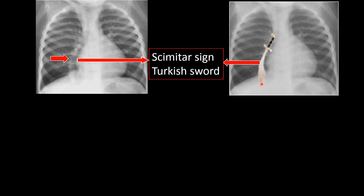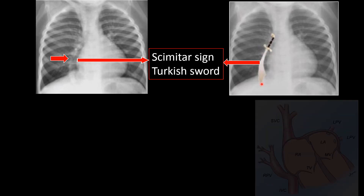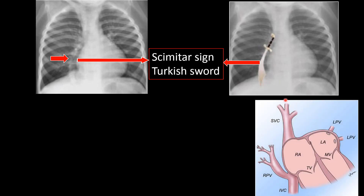The reason we get this scimitar sign is because the right pulmonary veins, rather than draining into the left atrium, drain most commonly via the IVC into the right atrium. So these right pulmonary veins draining into the IVC give this scimitar sign.